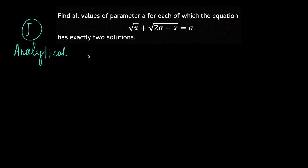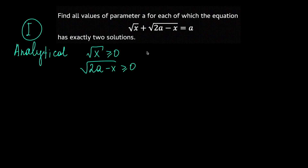The first thing I want to note is that the square root of x is non-negative, as any square root would be. The square root of 2A minus x is also non-negative, which means that the sum of these square roots is non-negative. So the parameter A itself is non-negative.